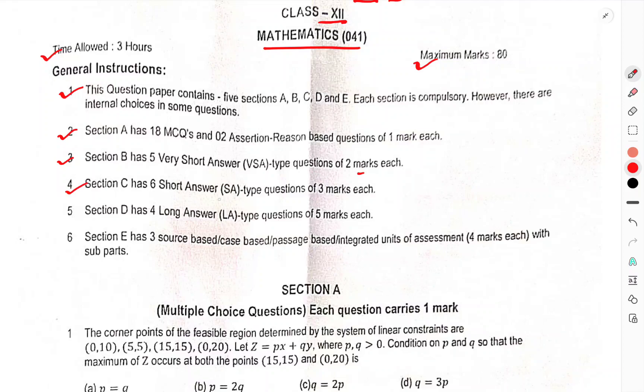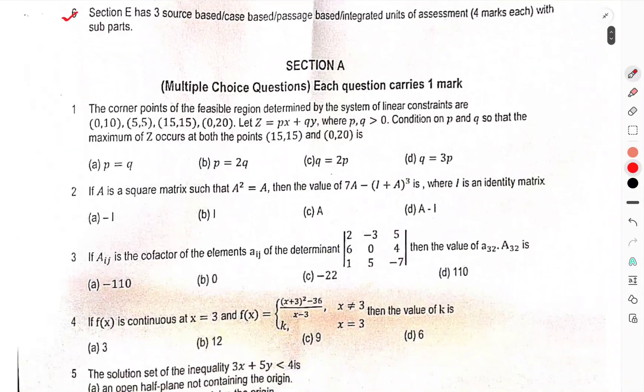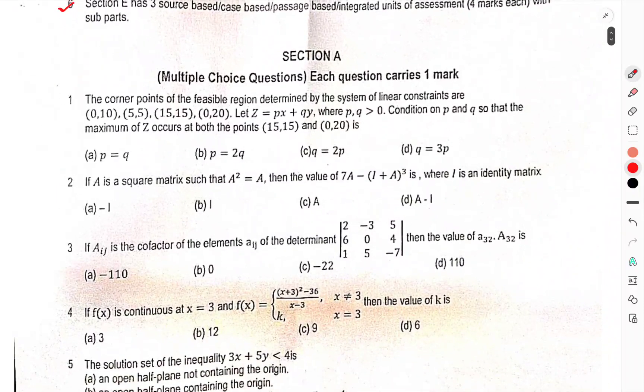Section B has five very short answer questions, two marks each. Section C has six short answer questions, carries three marks each. Section D has four long answer questions, five marks each. Section E has three source-based, case-based, passages-based integrated units of assessment, four marks each with subparts. Now we have come to section A. We have to discuss these questions only, so let us start.